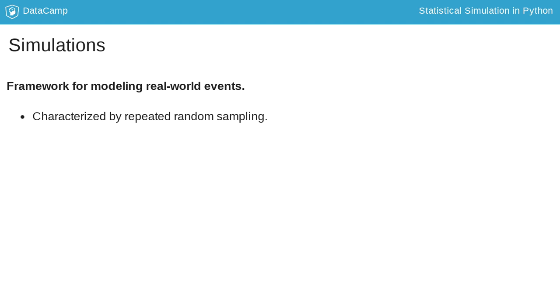Simulations are typically characterized by repeated random sampling, which means that we use the power of random variables to generate multiple outcomes. Think of simulations as tossing a coin again and again to record the outcomes.